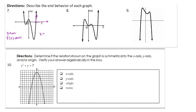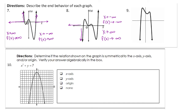As x approaches negative infinity on this same graph, our y values are also approaching positive infinity. For number eight, as x approaches negative infinity, f(x) is approaching negative infinity as well — so as x goes to negative infinity, so do the y values. As x approaches positive infinity, the y values approach positive infinity. For the next problem, f(x) values are approaching negative infinity, and as x approaches positive infinity, our y values are still approaching negative infinity.